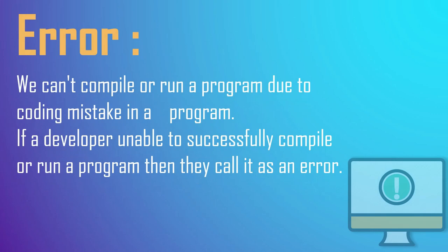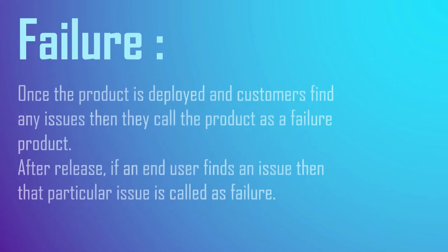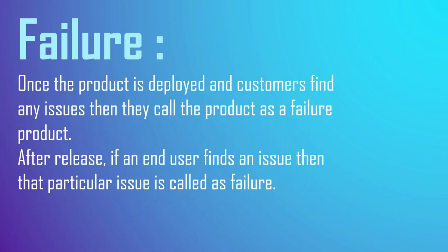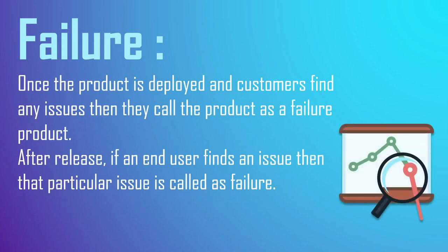What is an error? We can't know what the error is until we compile or run the program. If the developer cannot successfully compile or run the program due to a coding bug, then they call it an error.